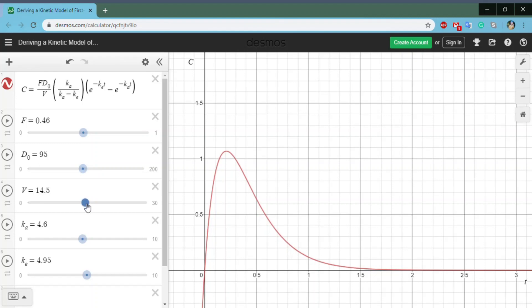Now, for volume, if I decrease the volume, you're going to start increasing the concentration, because that's how concentrations work. V is in the denominator. As you increase V, your concentration goes down.